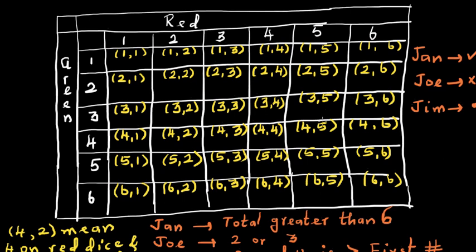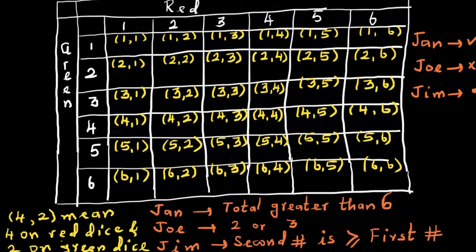So the red is on the top, and the green is vertical. So here 1,1, so I have defined this. Can you see this? This 4,2 means 4 on the red die. The first number defines, so this is 4,2, that means you've got 4 on the red die, and 2 on the green die. So this is what these numbers mean. We need to do crosses. Let's do a tick for Jan.